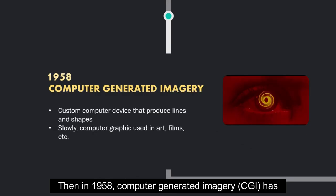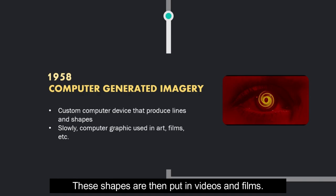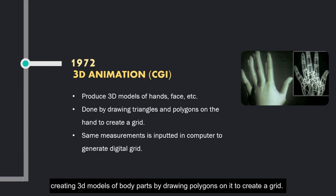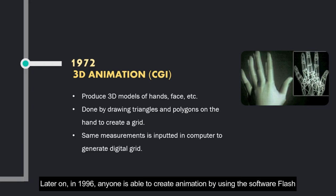Then, in 1958, computer generated imagery or CGI came into view, where computers can produce lines and shapes. These shapes are then put in videos and films. CGI is then innovated further with new abilities such as creating 3D models of body parts by drawing polygons on it to create a grid. The same grid is then digitally made in a computer.